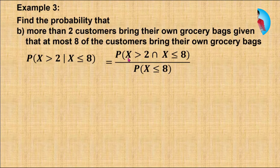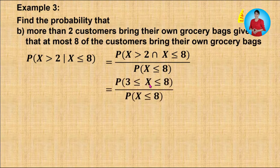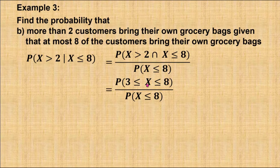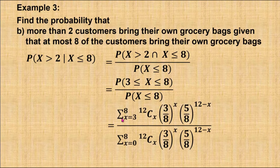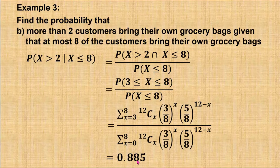The values of X which are greater than 2 and less than or equal to 8 are the values starting from 3, 4, 5, up to 8 — so X is between 3 and 8, inclusive. To find the probability, we use the summation of the binomial formula where the lower limit is 3 up to the upper limit 8. For probability X less than or equal to 8, we use the summation notation with lower limit 0 up to upper limit 8. When calculated, the answer is 0.885.